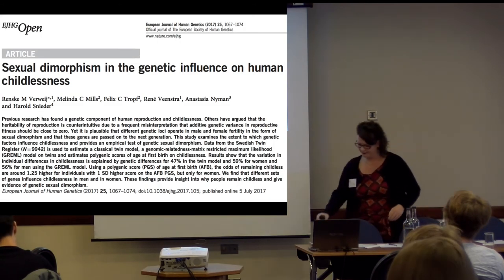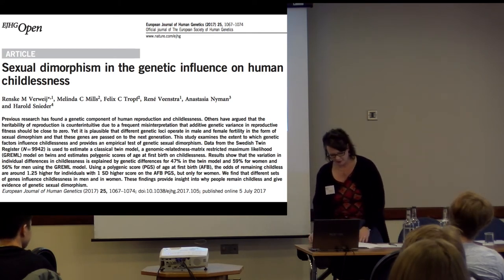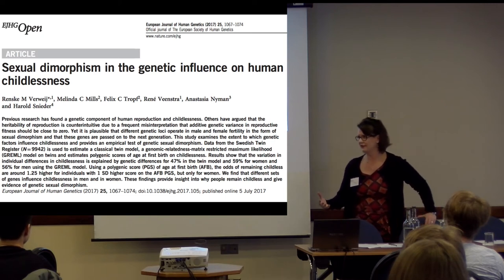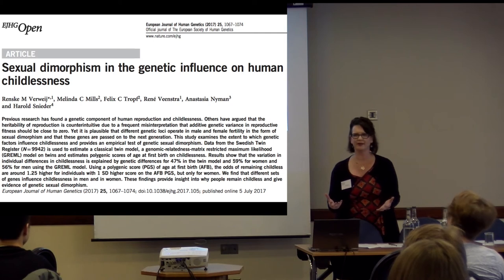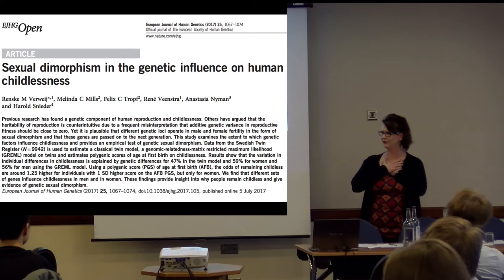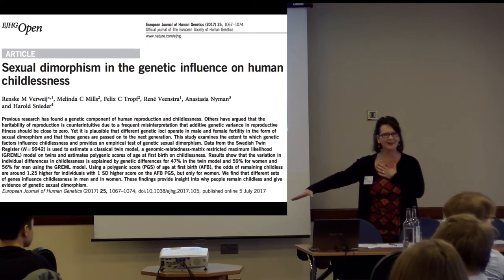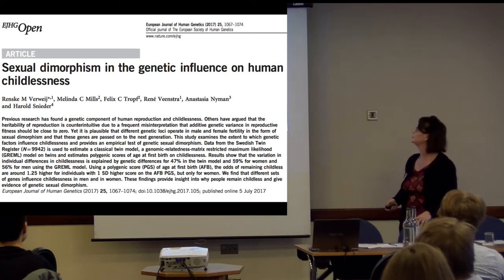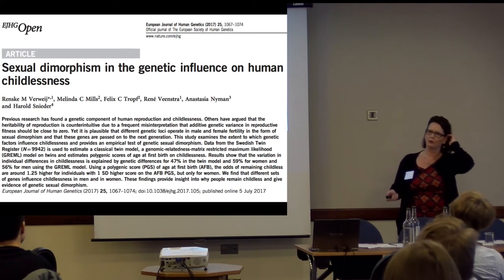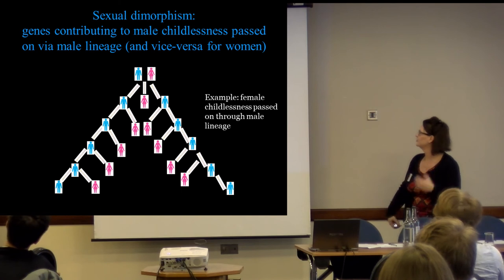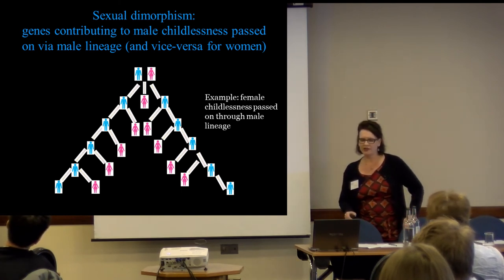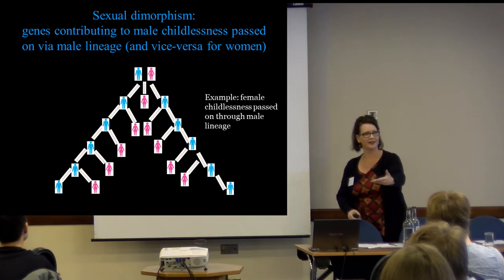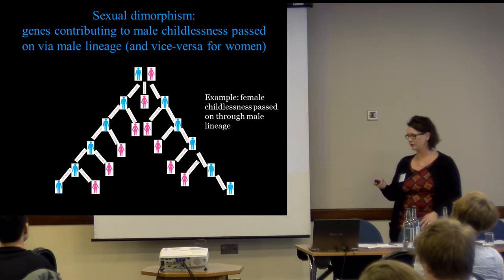We also started thinking about what's called sexual dimorphism — just published earlier this year. Some of you may have been thinking: how on earth is it possible that infertility and childlessness can be transmitted? If I'm infertile, how could I pass it on to my children? We published this in the European Journal of Human Genetics. It looks like genes related to male childlessness seem to be passed on via the male lineage, and vice versa for women — they skip a generation.